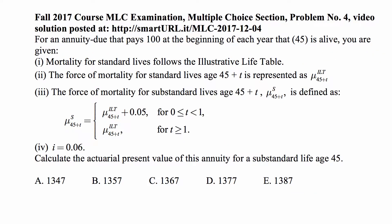This is problem number 4 from the multiple choice section of the last course MLC examination. For an annuity due that pays 100 at the beginning of each year that a 45-year-old is alive, you are given that mortality for standard lives follows the illustrative life table. The force of mortality for standard lives age 45 plus t is represented by μ_ilt^(45+t), with ilt standing for illustrative life table at age 45 plus t.